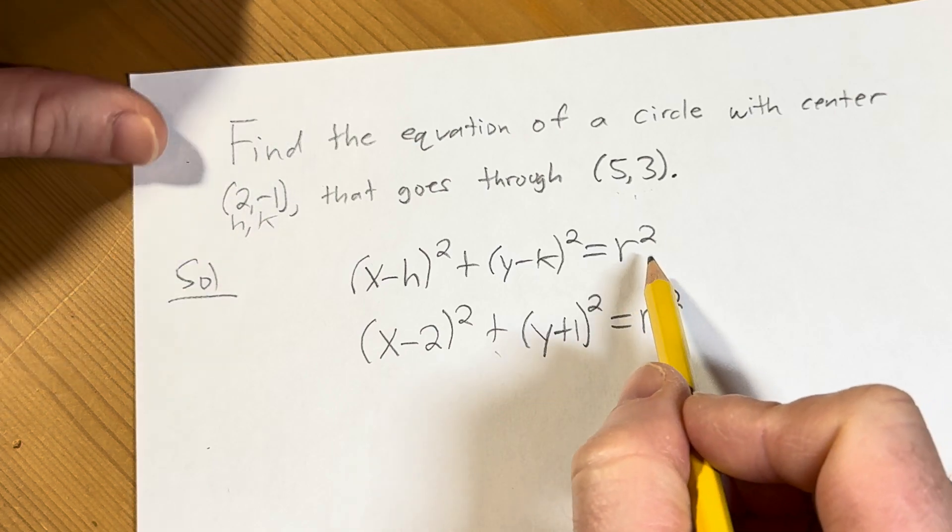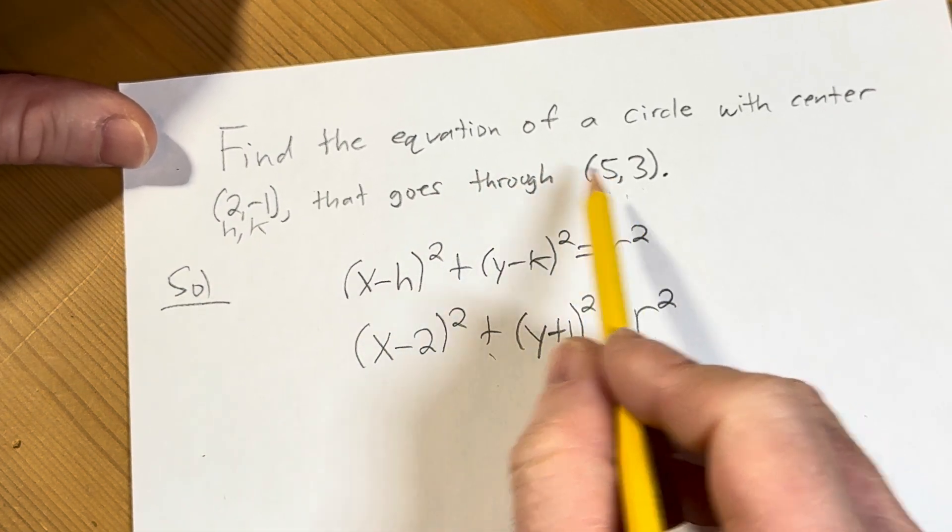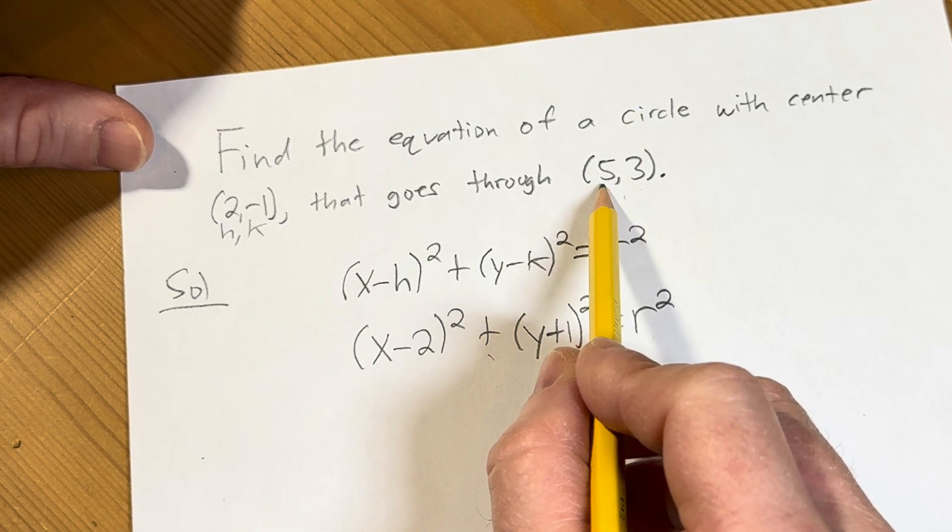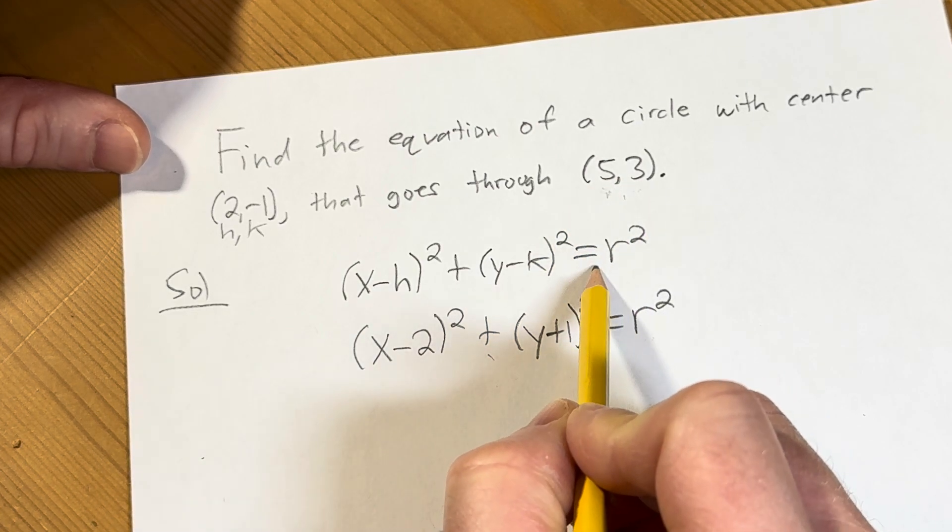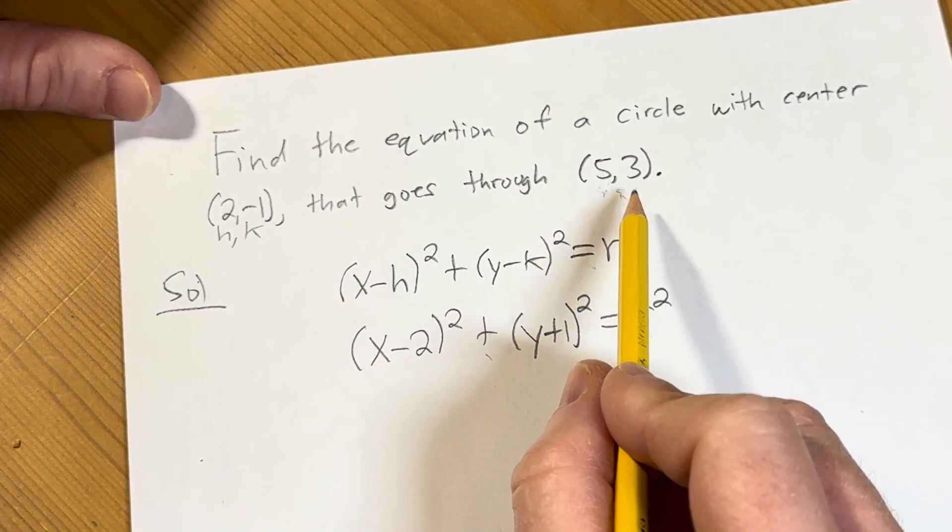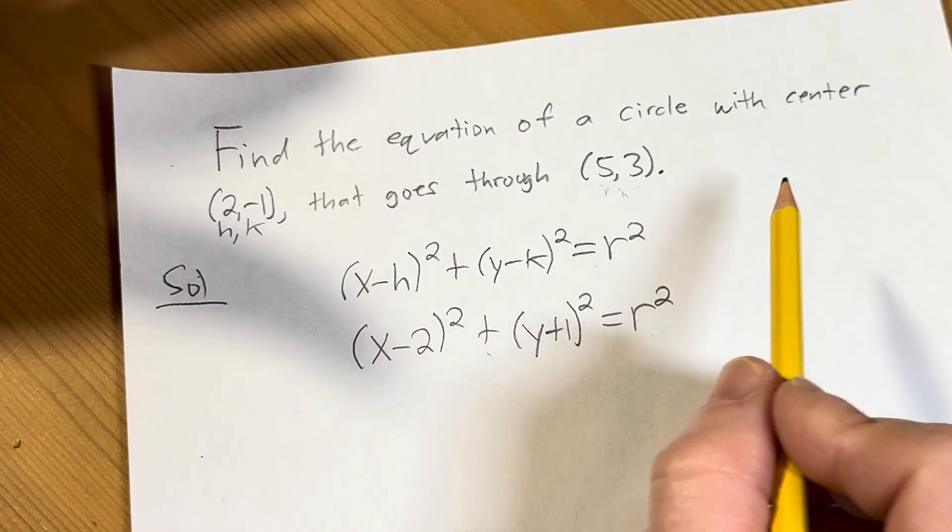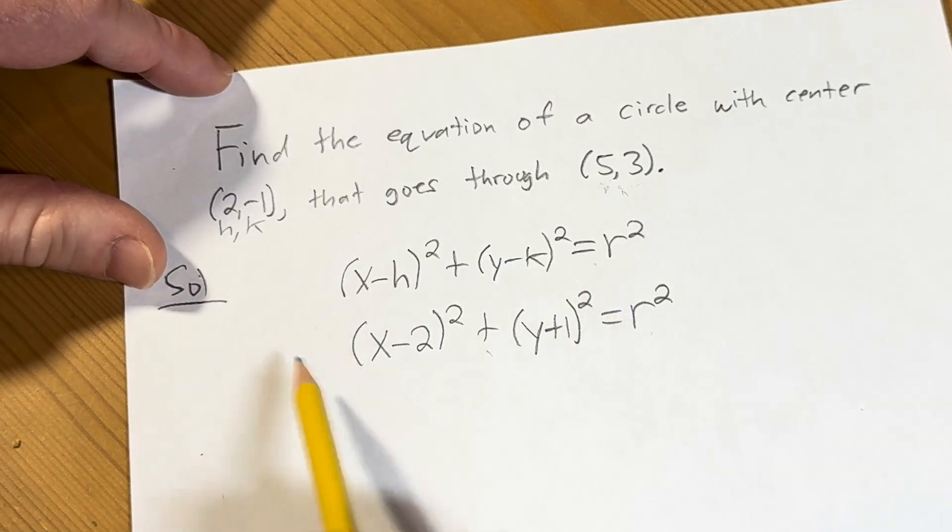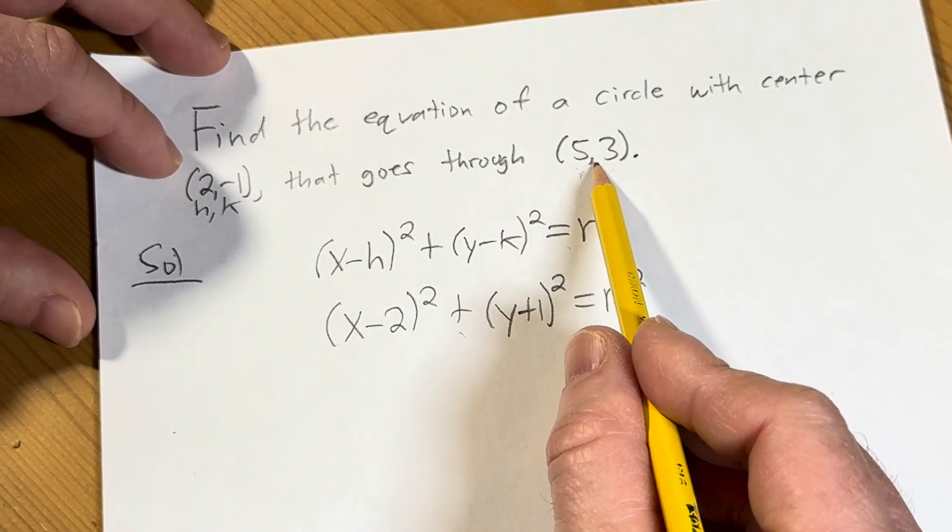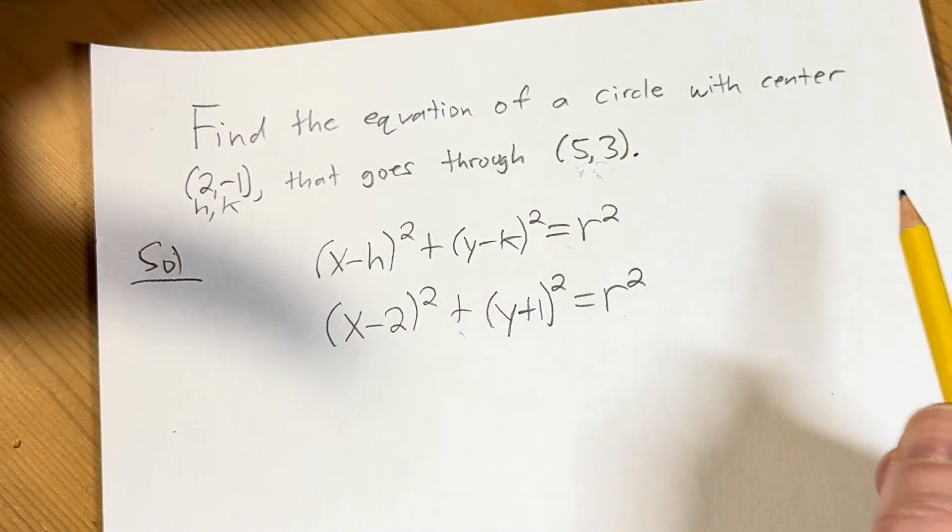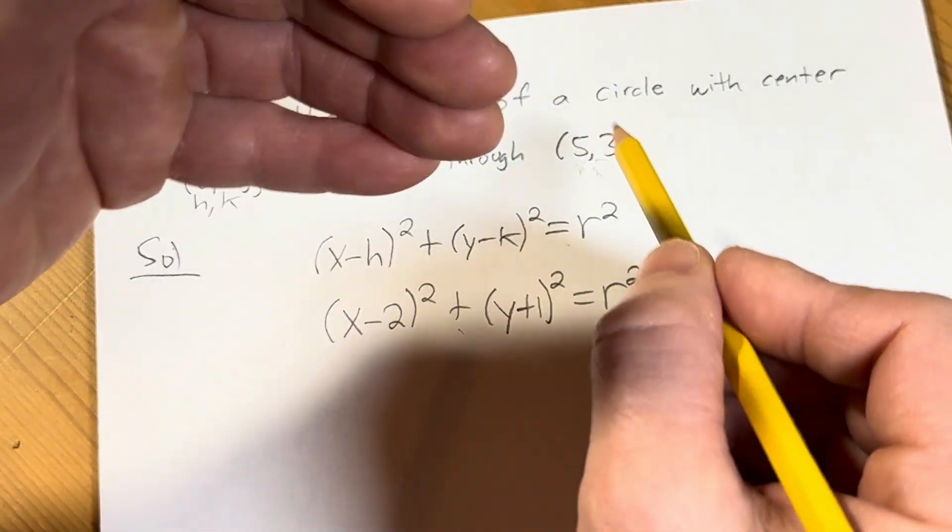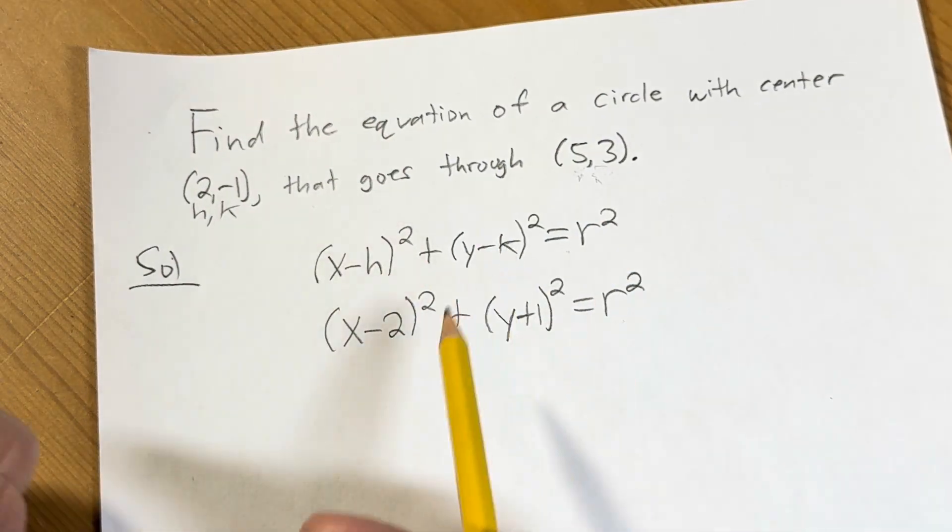The reason we can do that is because this equation, the circle passes through this point, right? So that means that if you plug in this point into this equation, it should be a true statement because this point lies on the equation of the circle. The circle is the set of all points in the plane that satisfy this equation, right? So this point, 5 comma 3, is in that set, right? That's what it means to say that it goes through 5 comma 3. So we can actually plug this into the equation and it's true.